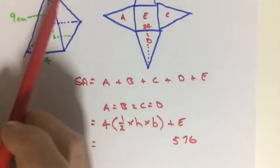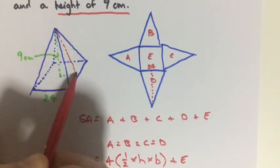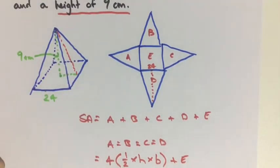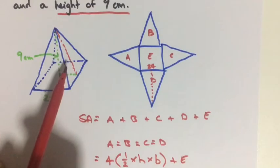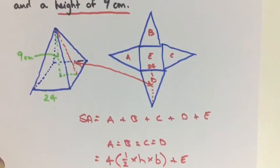What we need to find is the slant height. So from here to here, because that is the same line as this.